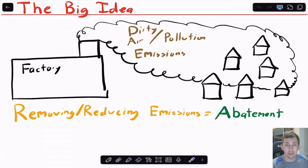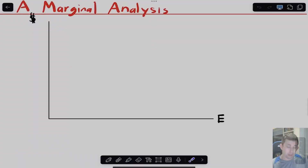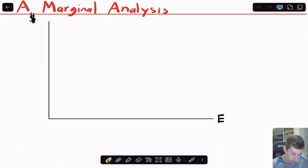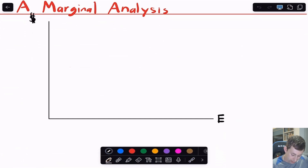Now we're going to take this into more of a supply and demand graph, very related to the externality video I've recorded before — it'll pop up in the right corner if you've got questions. We're going to do a marginal analysis, so we'll have dollars on the y-axis and emissions, or E, on the x-axis.